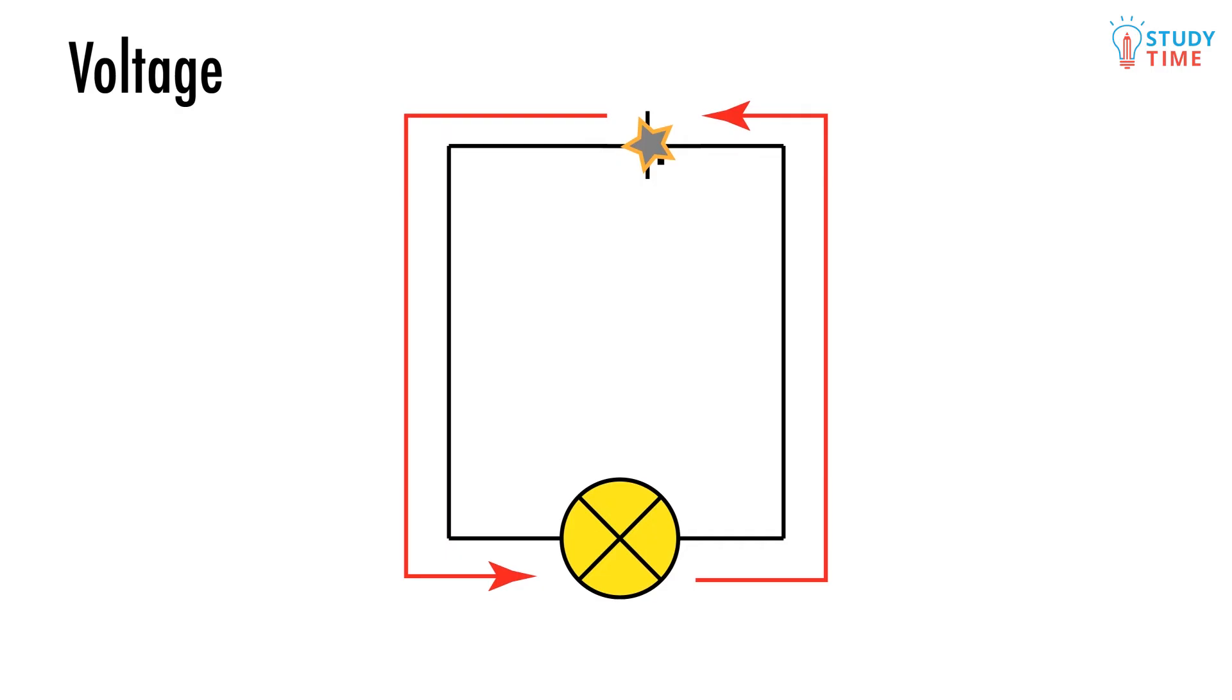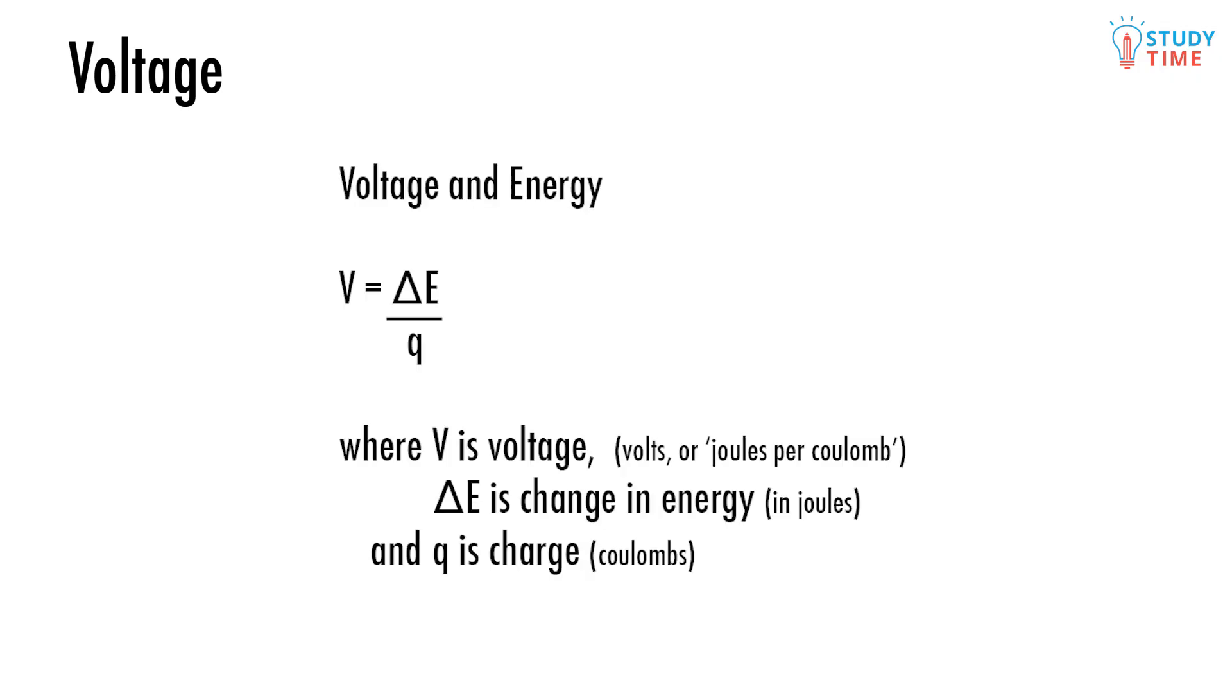The point we're trying to make is that voltage is like the amount of energy that each electron gives out. This comes from the equation V equals delta E divided by Q, the change in energy per Coulomb.